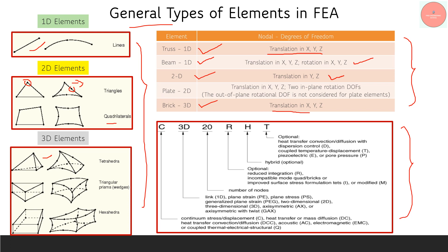Now let's discuss the nomenclature or notation of each element mainly in Abaqus. Taking the example C3D20RHD: 'C' stands for continuum or stress-and-displacement type, where we use it to identify stresses and displacements in components. For thermal or heat transfer problems we use 'DC'; for heat transfer convection or diffusion we use 'DCC'; for acoustic problems use 'AC'; for electromagnetic use 'EMC'. This tells Abaqus the type of problem being solved.